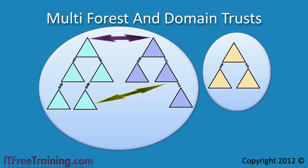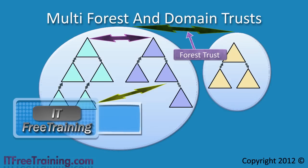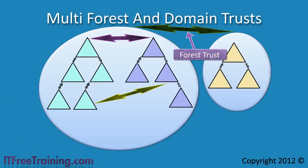In this particular case we also have another company that has its own forest. Perhaps they are owned by the same company but they want to keep their domains and forest separate. When this occurs you can create what is called a forest trust. In order to create a forest trust, you must be running at least Windows 2003 forest functional level. Forest trusts are not created by default and must be manually created by an administrator. Once created, any domain in either forest will be able to access resources in any other domain, assuming that they have access. Just like parent-child trusts, forest trusts are transitive.